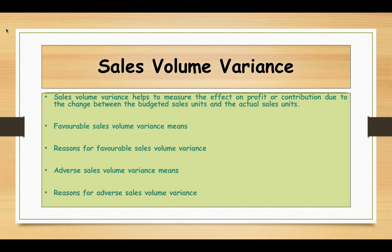Reasons for an adverse sales volume variance include: severe competition making it difficult to sell the required units; high sales prices compared to competitors; poor quality products; low demand for the products; or government restrictions. These could all be reasons for an adverse sales volume variance.